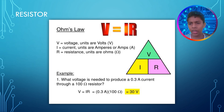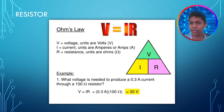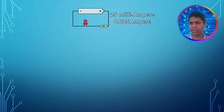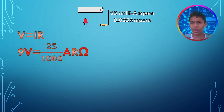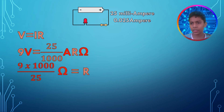Ohm's law states V equals IR. You can see an example on the screen. We can also calculate how much resistance is needed for a circuit. Taking an LED bulb as an example, the maximum current it can pass through is 25 milliamps, so we can calculate how many ohms we need in our resistor. You can also see the resistor on the screen.